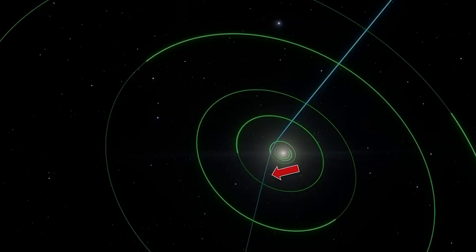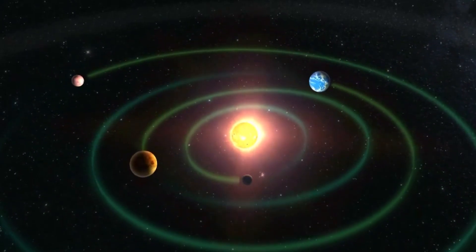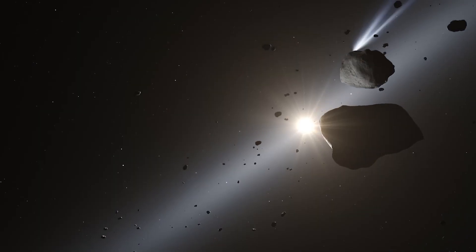The challenge intensified because 3I Atlas's trajectory was not merely unbound, but extremely hyperbolic, meaning its path was almost linear as it passed through our system.